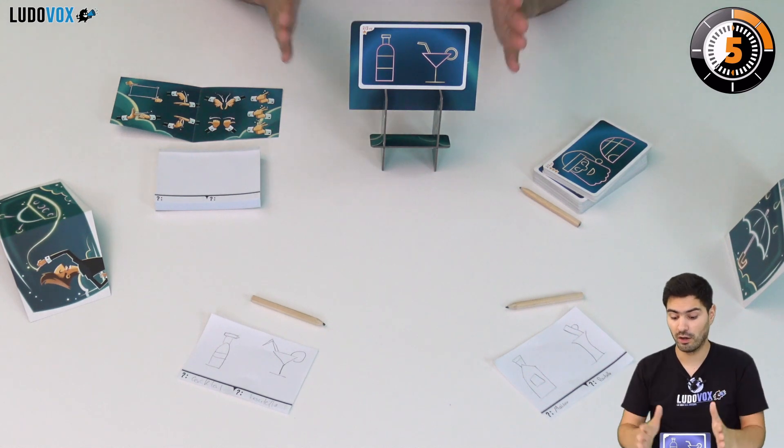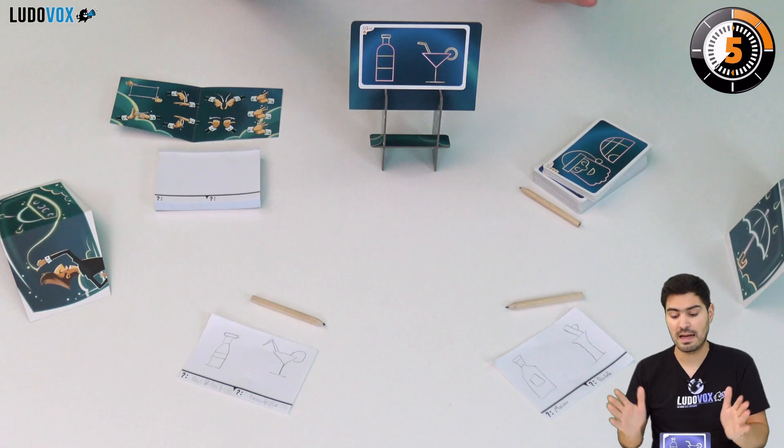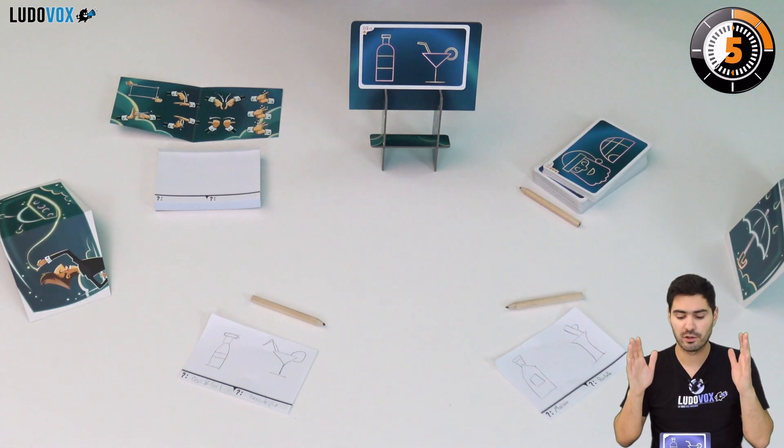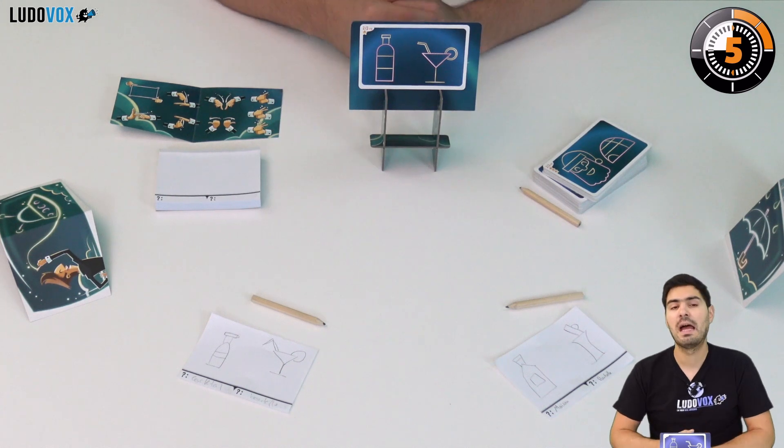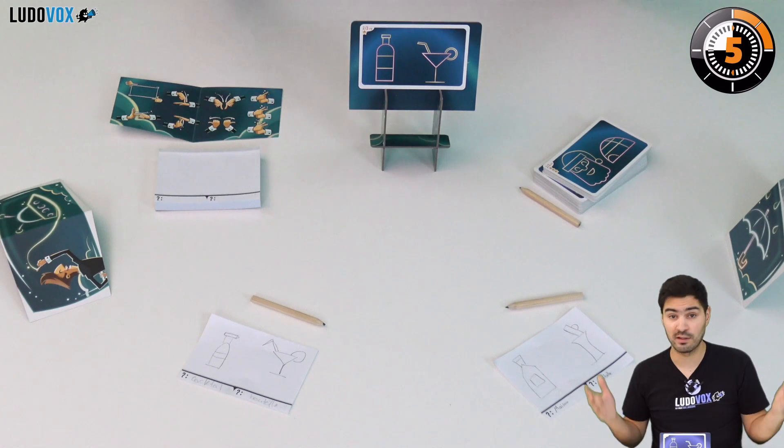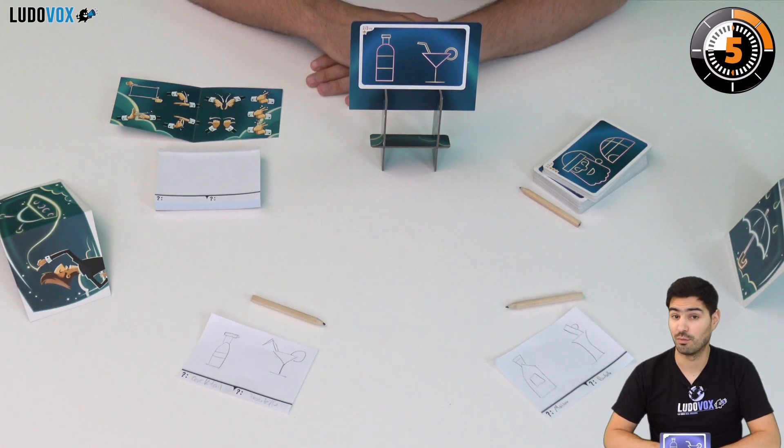So we are going to score our points and then shift roles. There are going to be four maestros in the game because we are going to be playing four rounds. At the end of the fourth round, we are going to add up our scores and the highest score is going to be the winner.